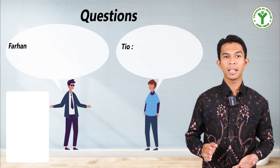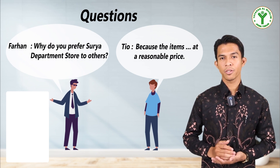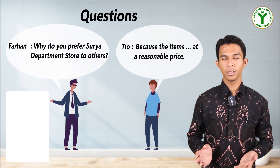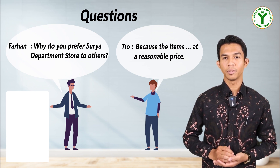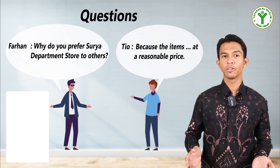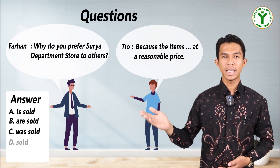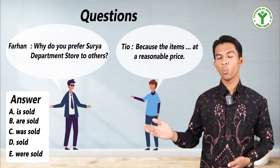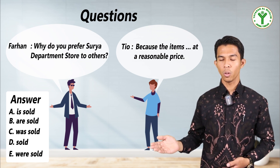Okay, now let's check your understanding by doing some questions. Question one: This is a dialogue between Farhan and Toyu. Farhan asks, 'Why do you prefer So Your Department Store to others?' Toyu answers, 'Because the items [blank] at reasonable price.' You can decide the answer: A) sold, B) are sold, C) was sold, D) sold, E) were sold.